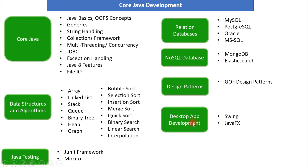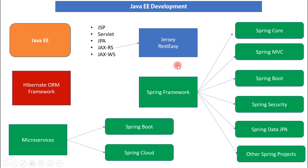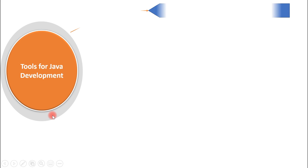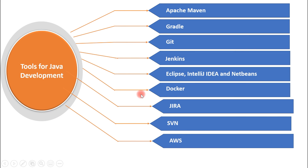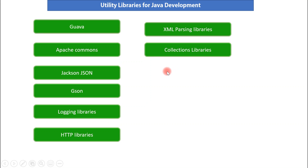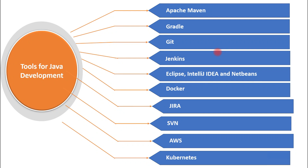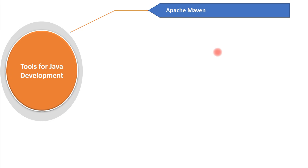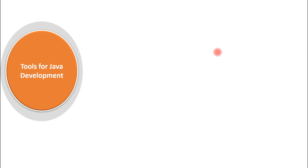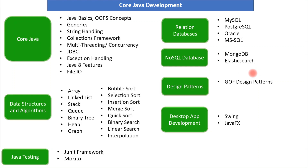To summarize the roadmap: begin with core Java basics, data structures and algorithms, testing frameworks, databases, and design patterns. Learn desktop application libraries like Swing or JavaFX. Then move on to Java EE development, learning Spring Framework, Spring Boot, and microservices. Finally, learn the required tools and utility libraries. If you learn all these tools, technologies, and libraries, you will become a good Java developer. Thanks for watching — I'll see you in the next video.